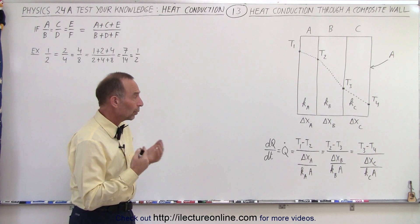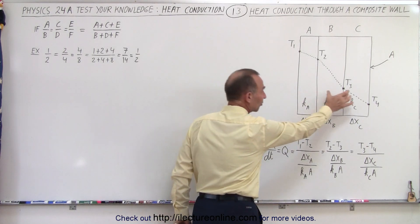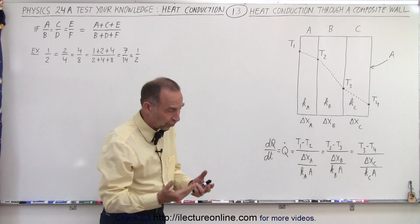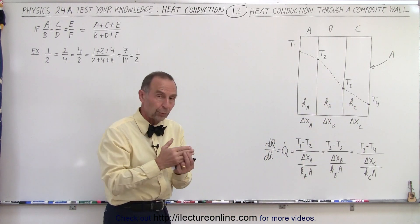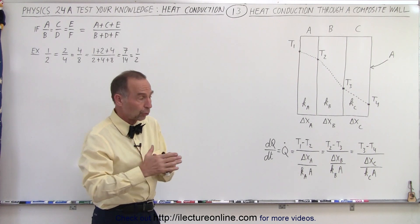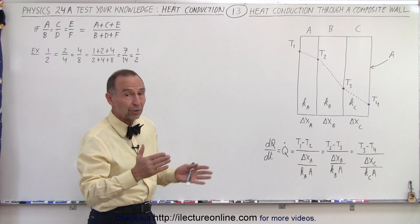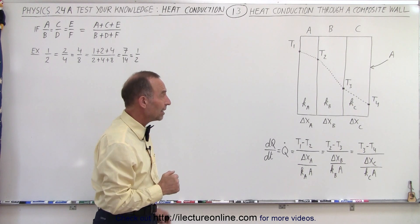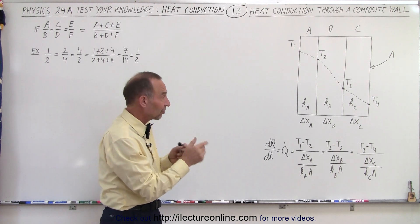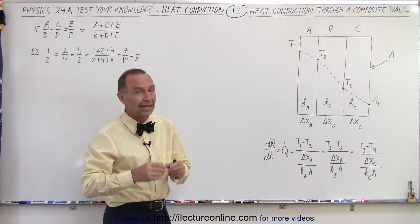The amount of heat flow through each section of the wall must be equal. Just like the water flow through a hose — the amount of water flowing through a hose doesn't change depending upon the diameter of the hose. Similarly, the amount of heat traveling through each section doesn't depend upon the heat conductivity.